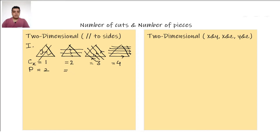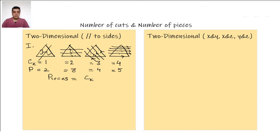In the second case the number of pieces is one, two, three. In the third case the cuts are three, giving one, two, three, four pieces. In the fourth case the cuts are four, giving one, two, three, four, five pieces. So we get the idea: the number of pieces equals the number of cuts plus one, i.e., P = CX + 1.